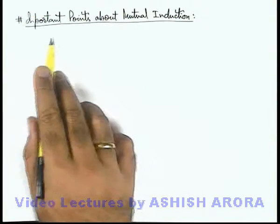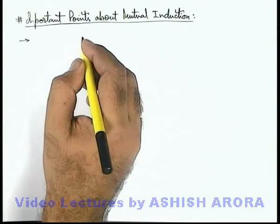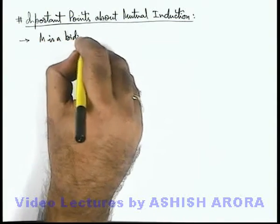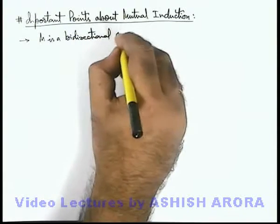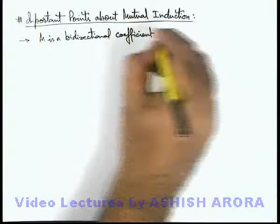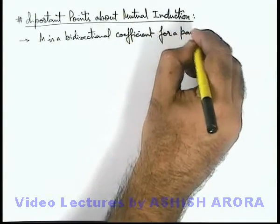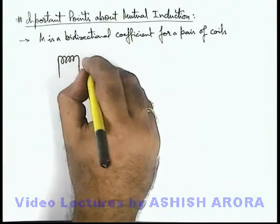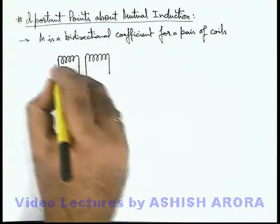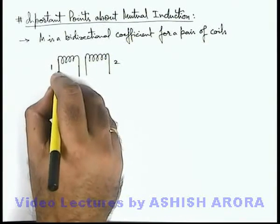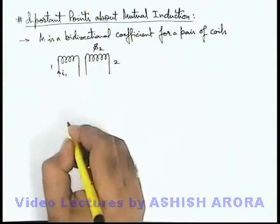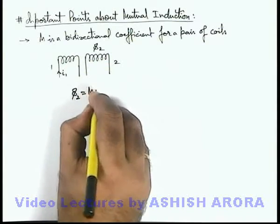Let us now discuss some important points about mutual induction. The very first point is that M is a bi-directional coefficient for a pair of coils. Like if we are given a pair of 2 coils, coil 1 and coil 2, then if a current i-1 is flowing in the first coil, some flux phi-2 will be linked with the second coil, and phi-2 can be written as M·i-1.